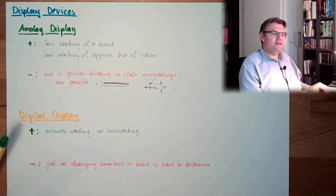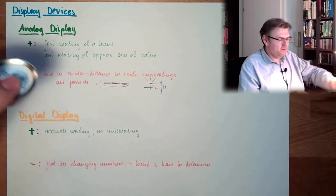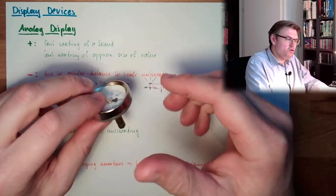I can stand at the other end of the room, and I can still, I cannot read the value, but I can tell if it's in the middle range. So, here we have very fast, fast reading of approximate size of value. Usually, those things are designed that the usual value, you can select the scale, and the usual value should be in the middle.